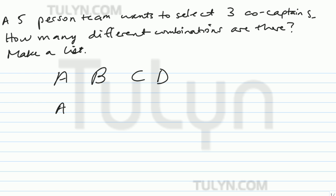So we're making a list. Start with A and then work with the second letter. You have A, B, and a third one in your combination: A, B, C. Then A, B, D.